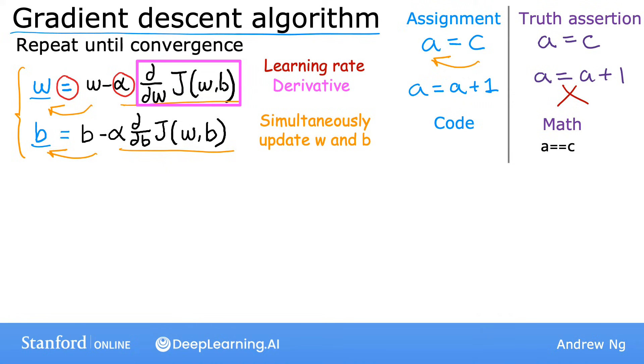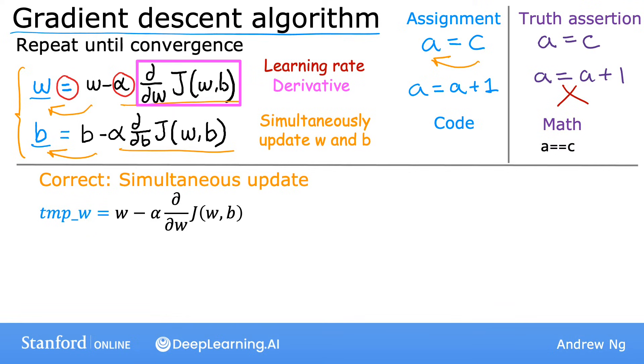So let's take a look at what this means. Here's the correct way to implement gradient descent, which does a simultaneous update. This sets a variable temp_w equal to that expression, which is w minus that term here. Let's also set another variable, temp_b, to that, which is b minus that term. So you compute both right-hand sides, both updates, and store them into variables temp_w and temp_b. Then you copy the value of temp_w into w, and you also copy the value of temp_b into b.